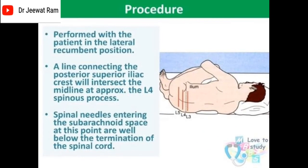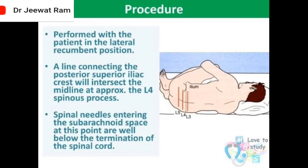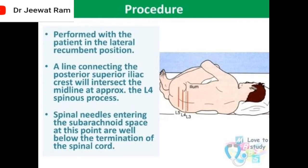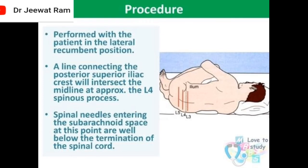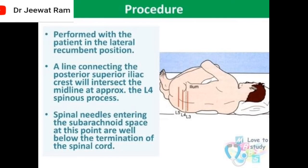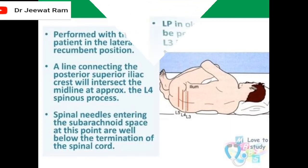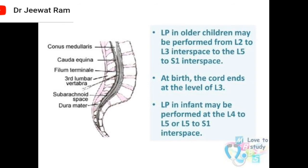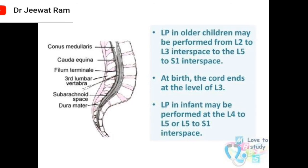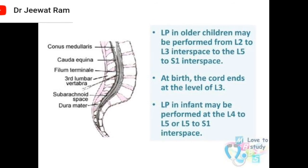Procedure of lumbar puncture: performed with the patient in the lateral recumbent position. A line connecting the posterior superior iliac crest will intersect the midline at approximately the L4 spinous process. Spinal needles entering the subarachnoid space at this point are well below the termination of the spinal cord. Lumbar puncture in older children may be performed from the L2-L3 interspace to the L5-S1 interspace. At birth, the cord ends at the level of L3.